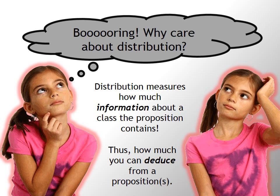Okay, by now, I'm starting to get even bored myself. So, you might be wondering, why care about distribution? Why is this an important concept to wrap our minds around? Well, distribution tells you how much information about a class, whether the subject or predicate, that the categorical proposition contains. And the reason why that's important is that it measures how much you can deduce from those conclusions. In other words, when we start putting together logical arguments, you need to have as much information on the class in the premises as you have in the conclusion.